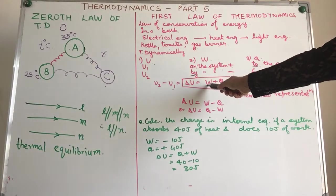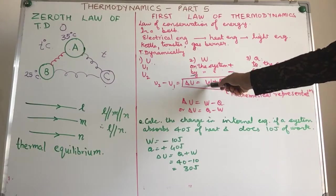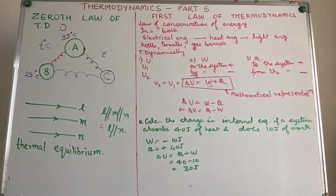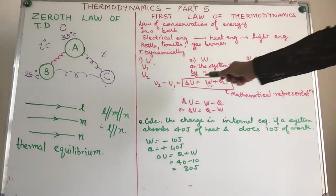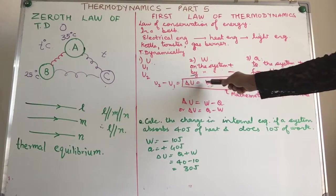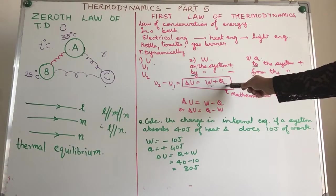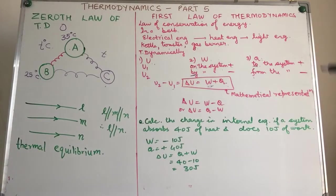You have done W amount of work on the system. You have added Q amount of heat to the system. Hence, the total change in internal energy is given by W plus Q. This is the mathematical representation of the first law of thermodynamics.